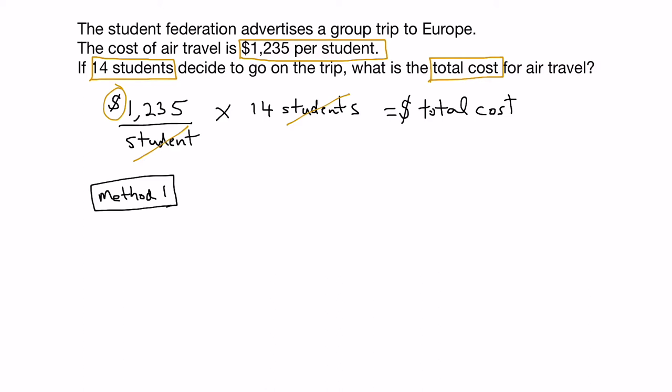The first method is called column multiplication. So what we do is we take the largest number and put it at the top, and then the smaller number on the bottom. And we make sure the place values are in the right column, so the ones, the tens, the hundreds, the thousands. And we start with the number 4, and we're going to multiply it by everything in the top row. So 4 times 5 is 20, so we put the 0 here, and we're carrying the 2 for the next column.